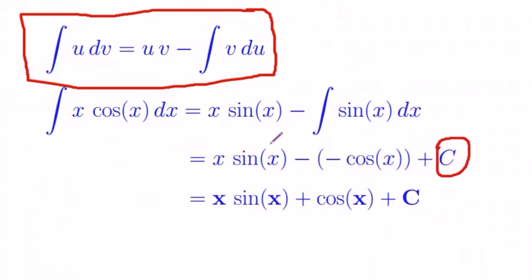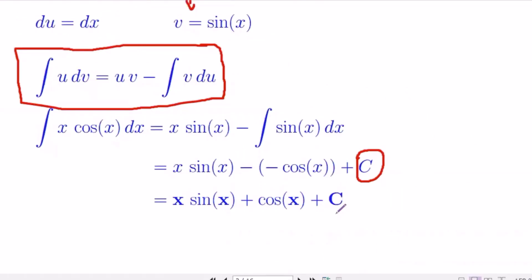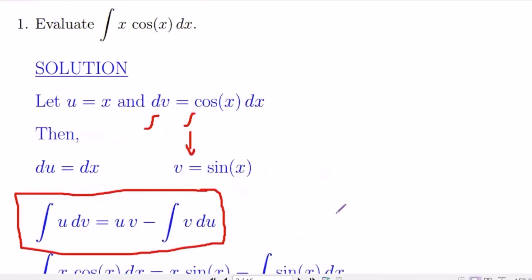When you simplify this equation, I can get x sine x, and this becomes positive plus cosine x plus integration constant. So this is the answer for integration of x cosine x.